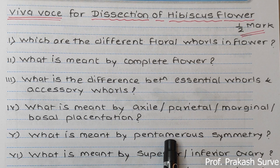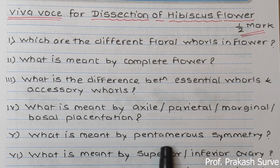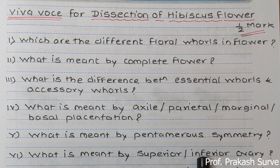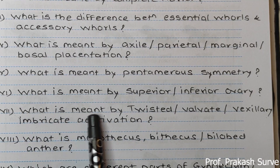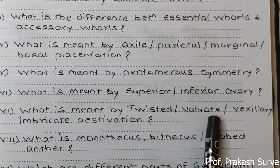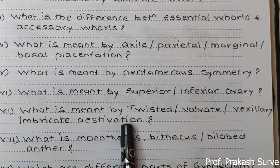What is a superior ovary? Superior ovary is at the top position while the remaining floral whorls are below it. Inferior ovary is at the base and the remaining floral whorls arise from above. What is twisted estivation? That has been discussed — as well as valvate, vexillary, and imbricate estivation, which we observed with diagrams.